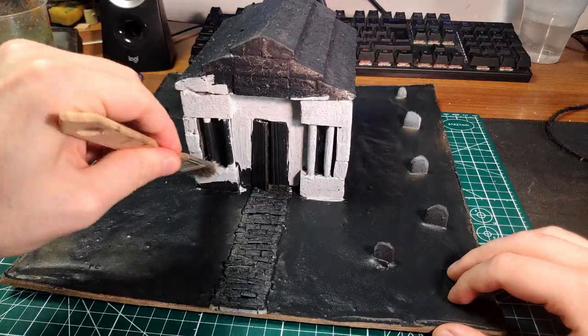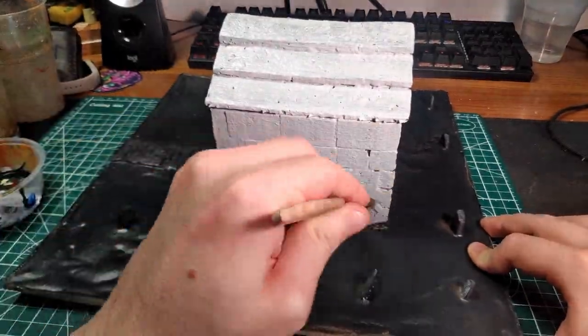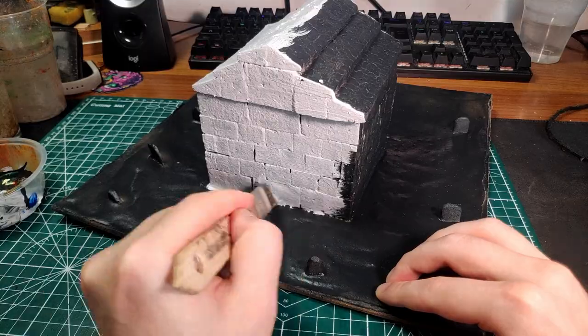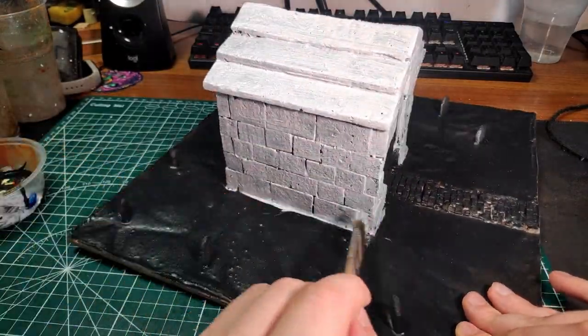Once everything is covered and dried, we can prime it black, and then start painting. First, apply a coat of light gray to the mausoleum, the path and the gravestones.